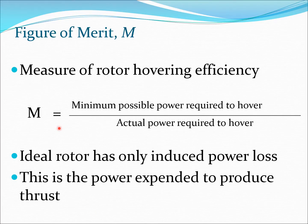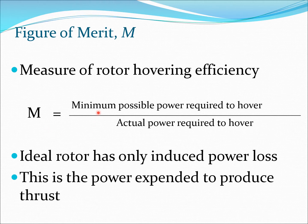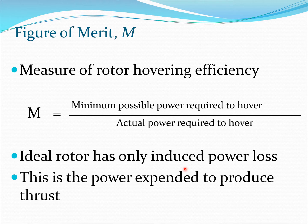The figure of merit — we use the symbol M to denote this quantity — is a measure of the rotor hovering efficiency. M can be defined as a ratio of the minimum possible power required divided by the actual power required to maintain hover flight. So naturally this is going to be one or less than one. The minimum possible power is the power related to generating thrust, which is the induced power loss.